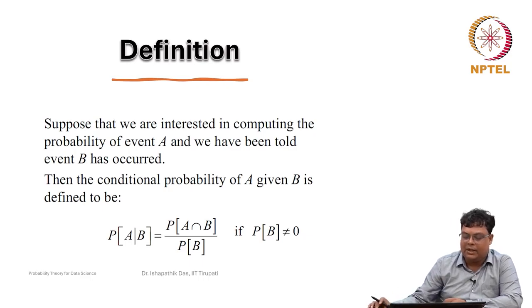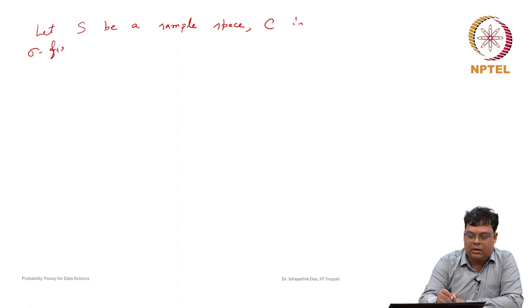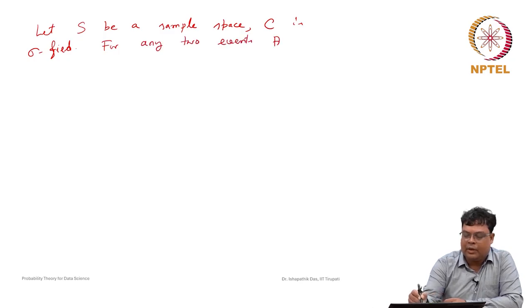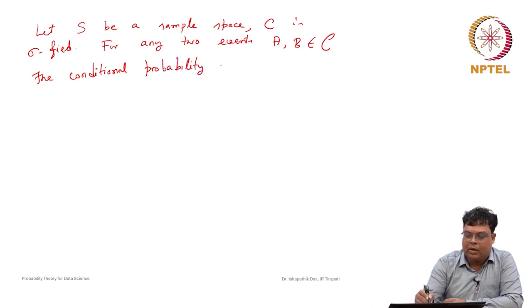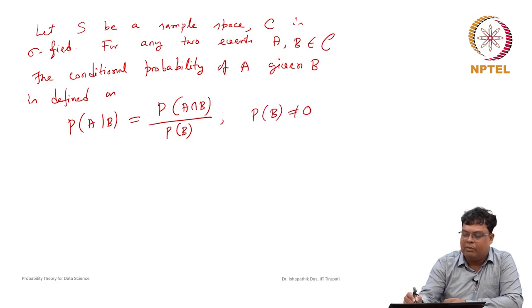The conditional probability of A given B is defined as follows. Let S be a sample space and C is a sigma field. For any two events A, B belonging to the sigma field C, the conditional probability of A given B is defined as P(A|B) = P(A∩B) / P(B), where we assume that P(B) ≠ 0.